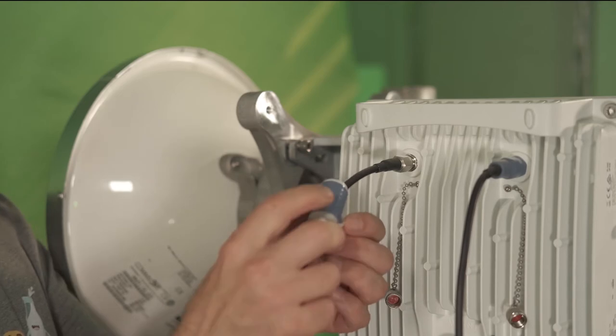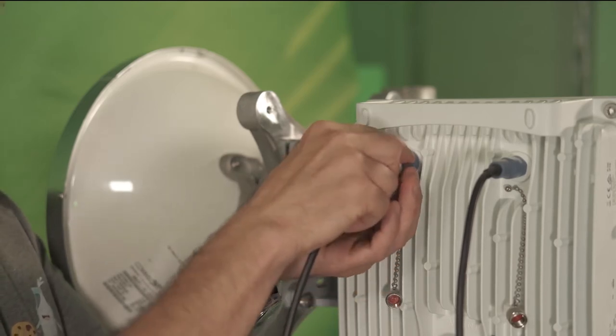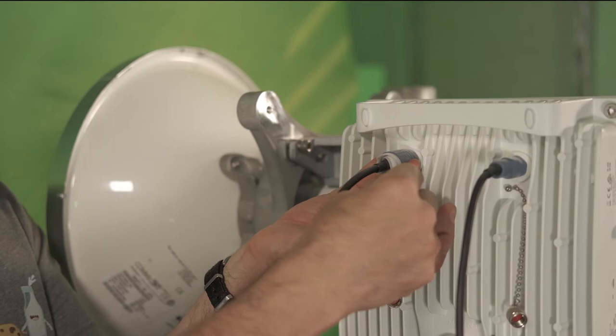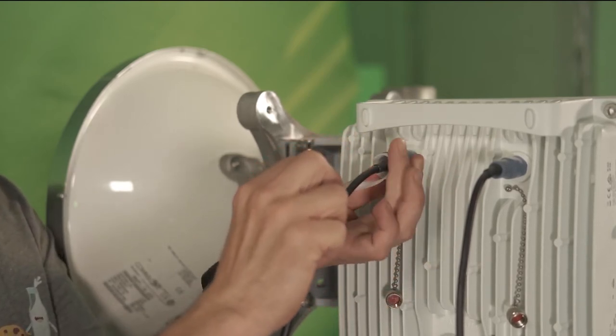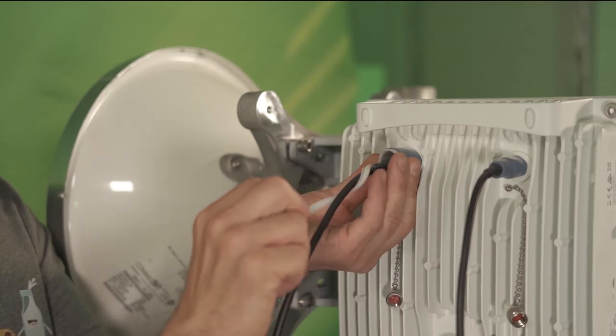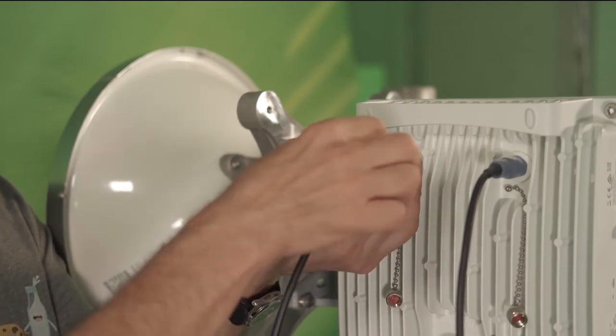Now we'll take our cold shrink and slide it all the way up to the base of the radio, as far as we can go. And we'll slowly take this tail and pull it out. That's going to collapse this tube, and our cold shrink is going to seal around the connector.